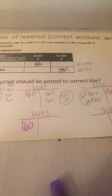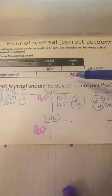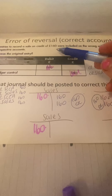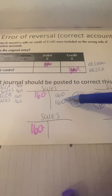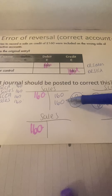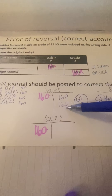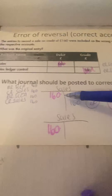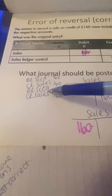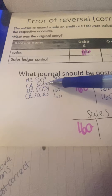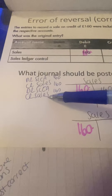So if you look here, you can see that to correct an error of reversal, you have essentially posted the correct double entry twice - once to remove the incorrect and once to put the correct in. Because if you look here at our double entry: debit sales ledger control, debit sales ledger control, credit sales, credit sales. So you've essentially done the correct double entry twice.